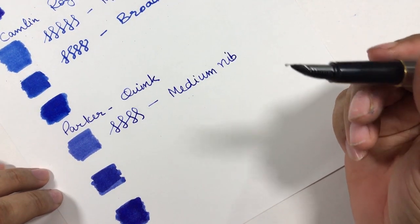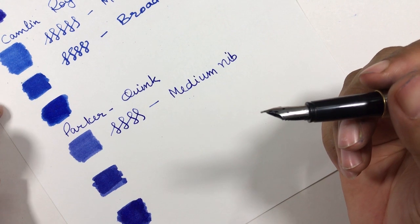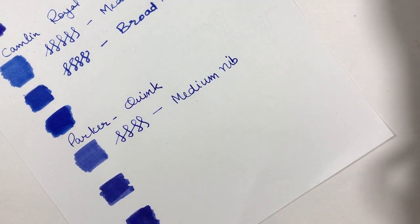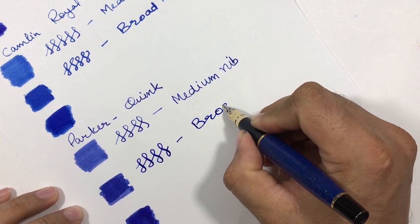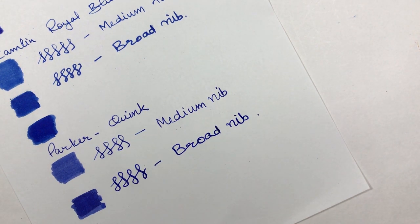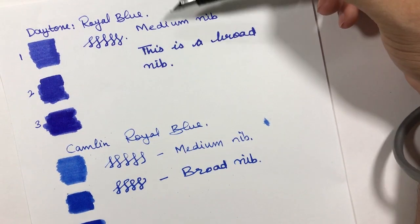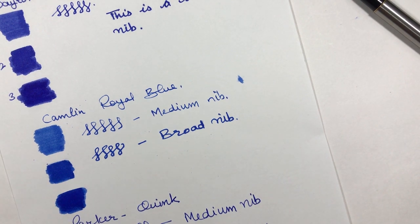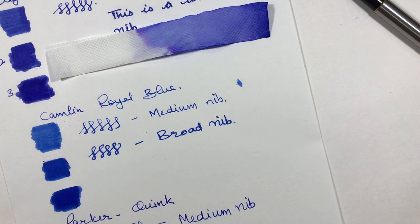The flow of this Parker Quink is much better than Camlin and Daytone, but the flow of Daytone was better than Camlin. I'll use a broad nib as well. Now you can see the clear differences here. Let's talk about the color of these inks. This Daytone ink is more indigoish, it has some indigo touch to it. I've done chromatography also of these inks. I'll show you the chromatography of each of the inks: this is Daytone, this is Camlin, and this is Parker.